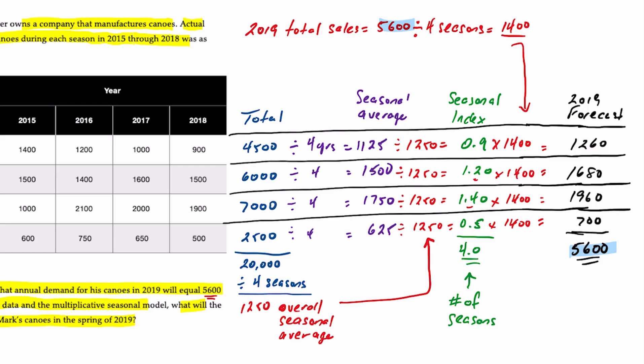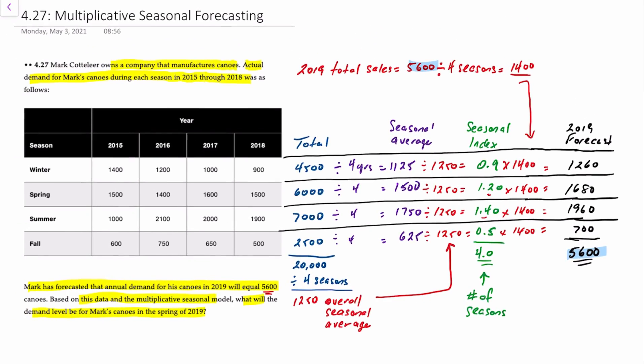If you haven't noticed, this method doesn't actually forecast the total sales for the period. What it does is take a forecasted total sales — which you could derive using another model — and then breaks that down into individual seasons. For example, you could use exponential smoothing, moving average, or any other method to determine the 2019 forecast of 5,600, and then break that down into the four seasons using multiplicative seasonal forecasting. And there you go — all finished. Hope you found this useful.